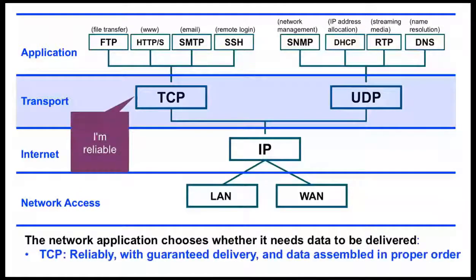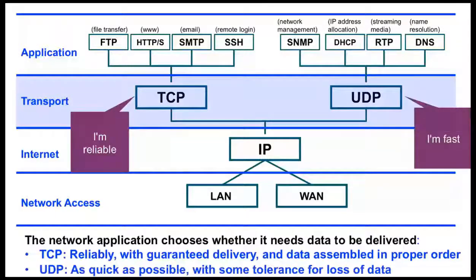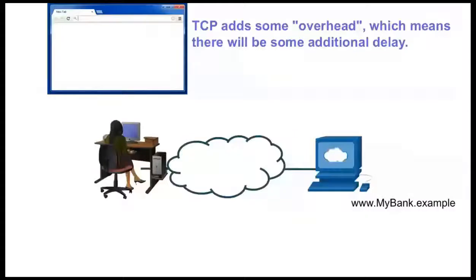If the application chooses TCP, the data will be delivered reliably with guaranteed delivery and assembled in the proper order. Or it can choose UDP when the data needs to be delivered as quickly as possible, with some tolerance for loss of data. TCP adds some overhead, which means there will be some additional delay. For example, the network application HTTP uses TCP to make sure all the data is delivered reliably.